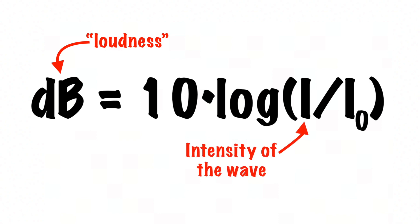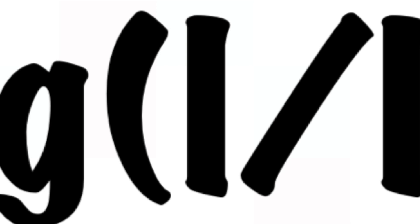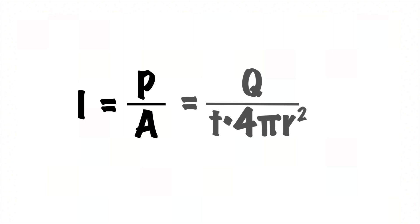Now we're going to take a look at this I right here. Intensity is equal to the power of your wave divided by the area that it is landing on, or in other words, the amount of energy that hits a given area over some time interval.